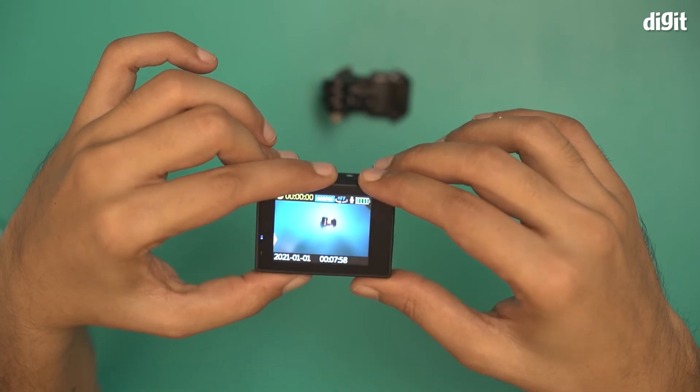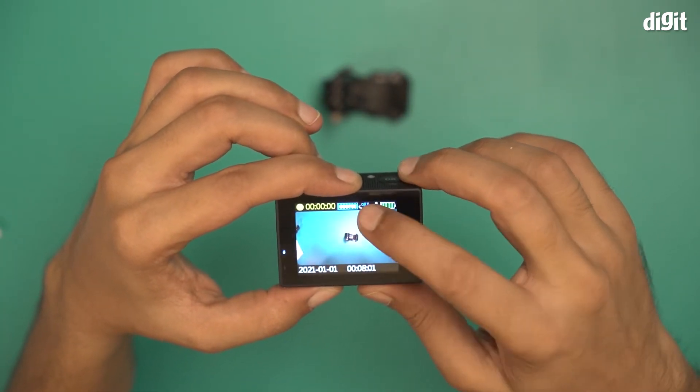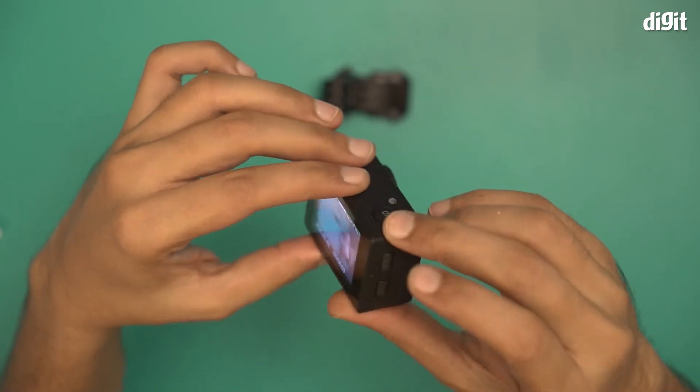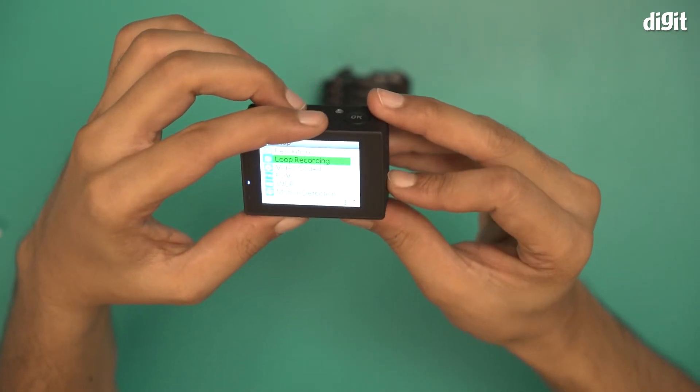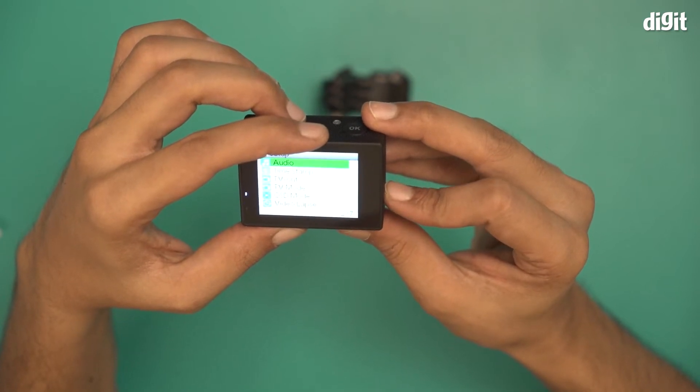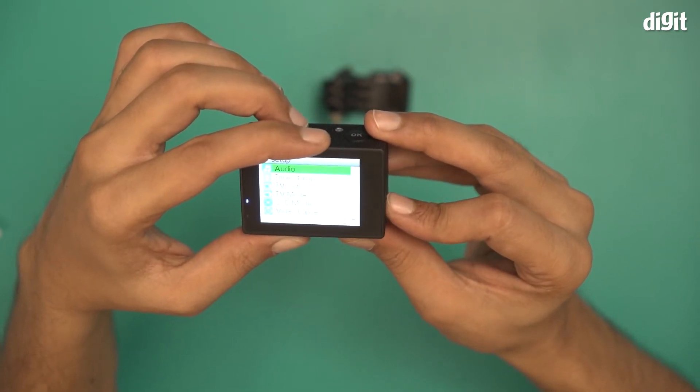Also notice that ever since I changed it to 1080p, it's showing 1080p right on top. I'll go back to the menu once again and let's see what else we have. There is WDR, motion detection, audio, time stamp, TV out, TV mode, OSD mode, and video lapse.